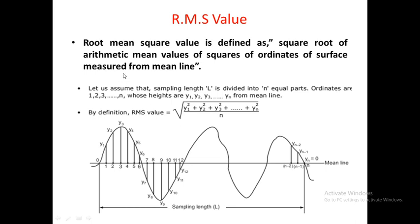Next we will see the RMS value, that is the root mean square value. As per the definition, root mean square value is defined as the square root of the arithmetic mean of the squares of ordinates of the surface measured from the main line. Here we have taken the sampling length as L — a particular portion of the workpiece — over which we will determine the roughness value of the surface.